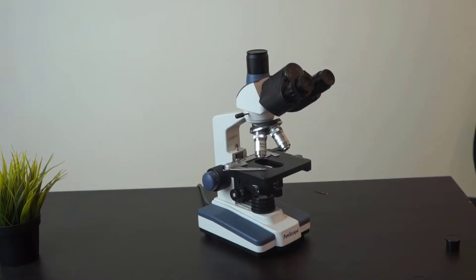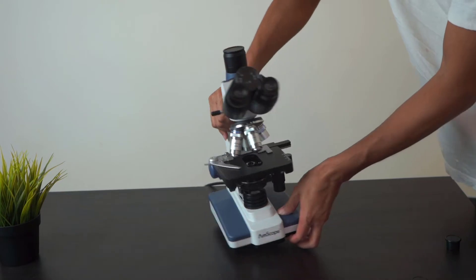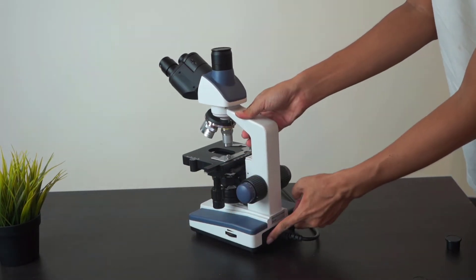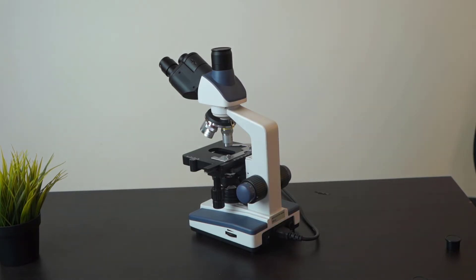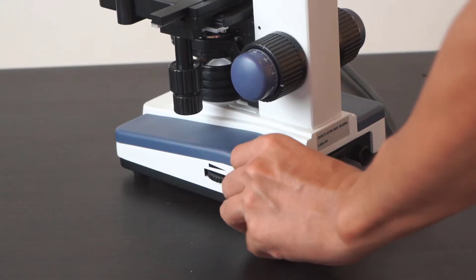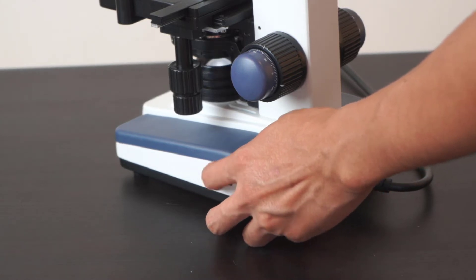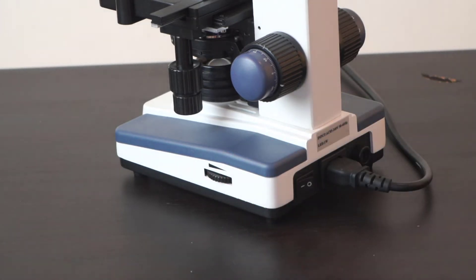To move the microscope, hold the neck and the bottom of the microscope. In the back of the microscope there is a switch which you can use to turn on the LED, and you can use the dimmer to control the intensity of the LED light.